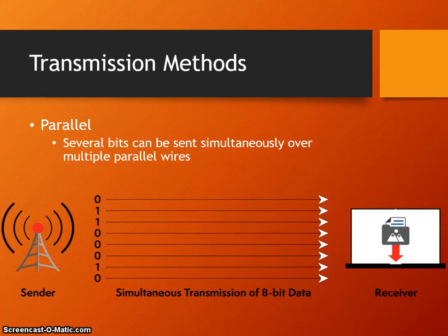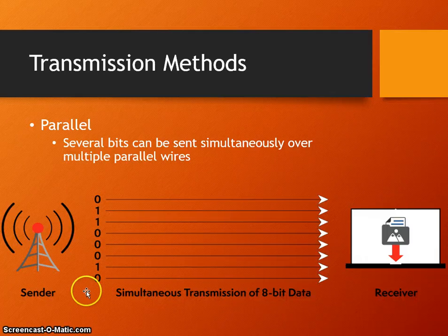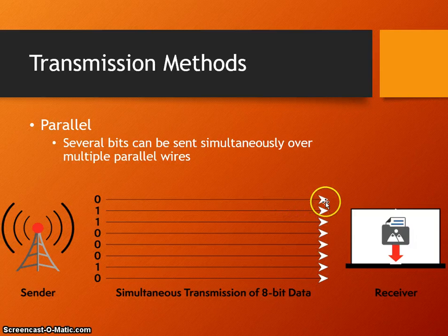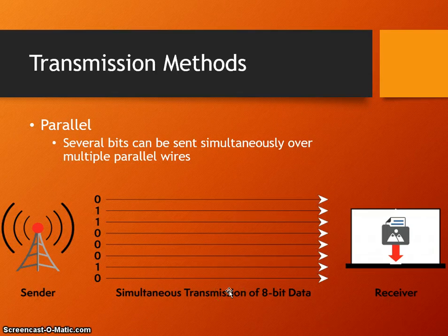The alternative is parallel, where several bits can be sent simultaneously over multiple parallel wires. Several bits are sent at the same time — that's what simultaneously means. So if we've got one byte, all the bits of that byte are sent across the cable all at the same time. This type of transmission we've seen on the buses and internal components of the computer system, such as the data bus and the address bus, where many bits are sent at the same time to carry an address or data from main memory.